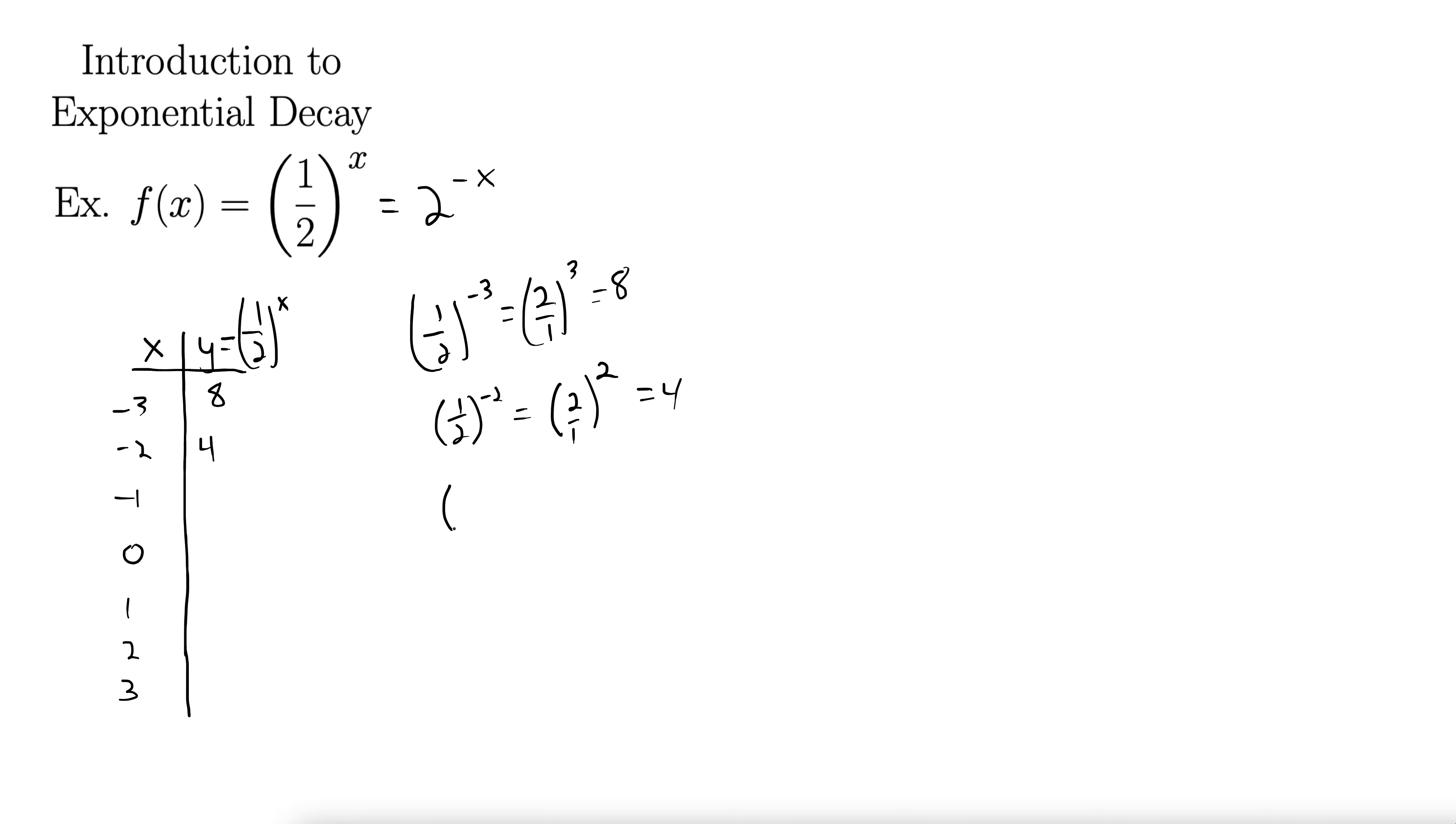Negative 1, so we have 1 half to the negative 1, well that flips it up, that just gives us 2. Anything to the 0 is 1, anything to the 1 is itself. 1 half squared is 1 fourth, 1 half cubed is 1 eighth.